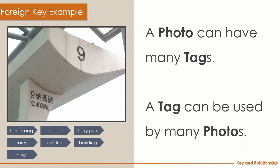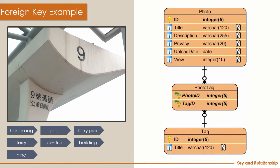A photo can have many tags and a tag can also be applied to many photos — this is a many-to-many relationship. In the database world, to handle this we need a middle table, forming two one-to-many relationships to make up the many-to-many relationship.